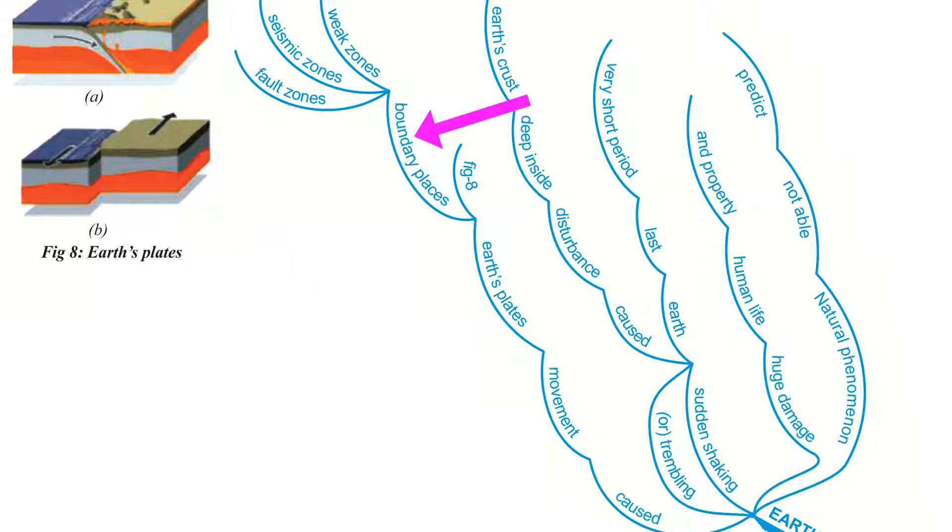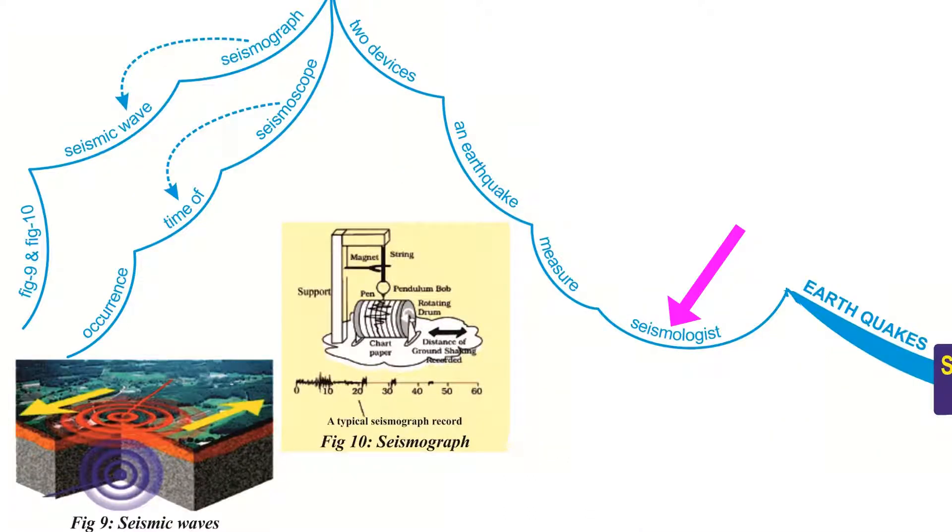The places at the boundaries of the plates are considered as weak zones, also called seismic zones or fault zones. Seismologists measure earthquakes using specialized instruments.